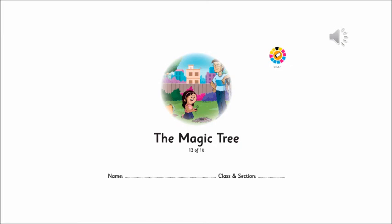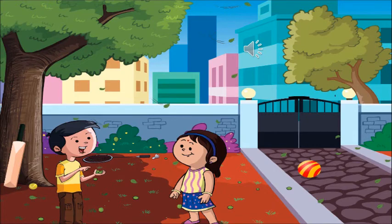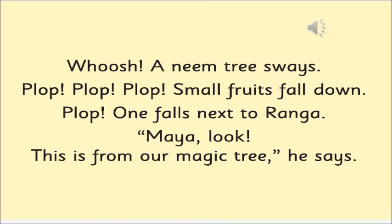Now let's move on and open to the first page. What do we see? Two children. Yes, let's guess what their names are — Maya and Ranga. Do you think they are friends? They look like friends, right? And which tree are they talking about? A neem tree. What is falling down from the tree? Small fruits are falling down from the tree.